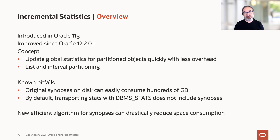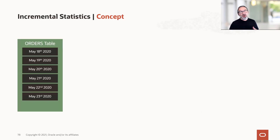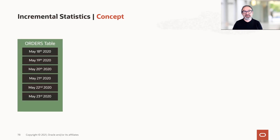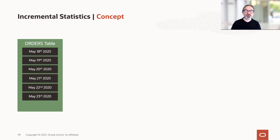With 12.202, the feature got significantly improved with a new algorithm for the synopsis. But the new algorithm is not picked by default, so we have to do a little bit of configuration. I'd like to show you first the concept of incremental stats, then the configuration steps we need to take, and third, explain what you should do when you upgrade to 19c.